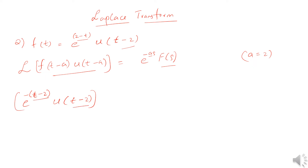Now, to find F(s), we take the Laplace transform of the inner function e^(-(t-2)). We treat this as e^(-t), whose Laplace transform is 1/(s+1). So F(s) = 1/(s+1).